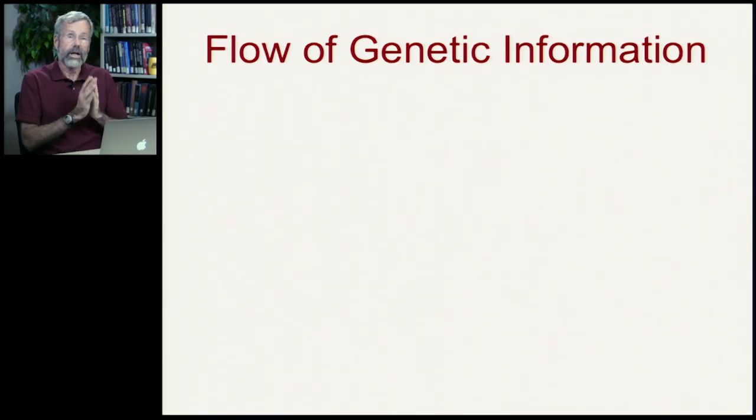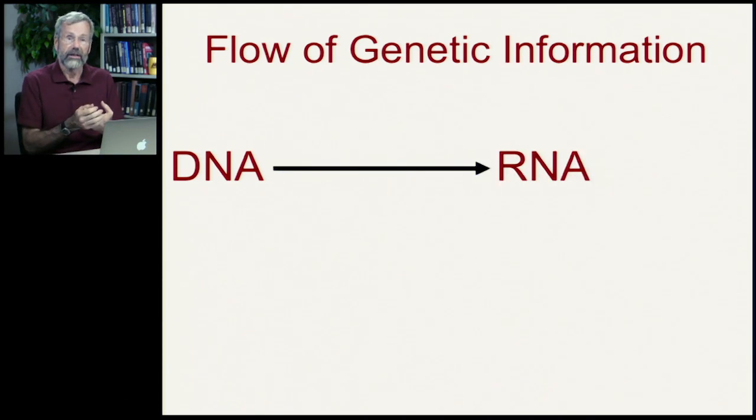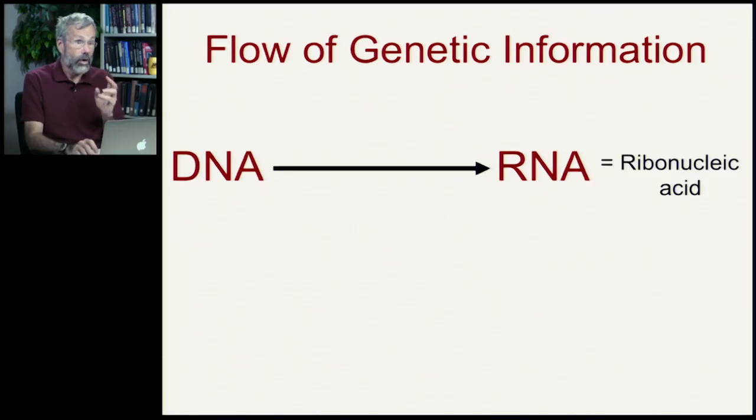There is a very well-defined sequence in the flow of genetic information. When we start out with the DNA, this is like the library, the repository, the instructions for coding the building of a body. From DNA, we get RNA, which is ribonucleic acid, through a process called transcription.